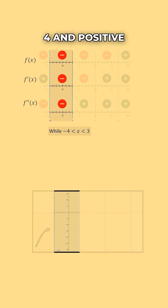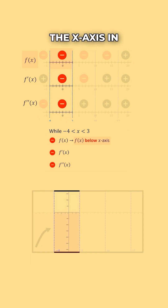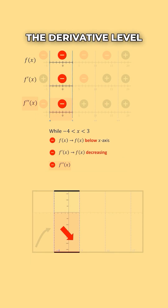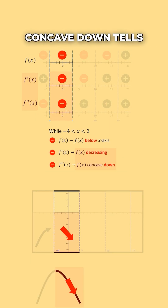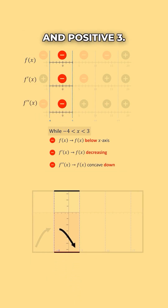Moving on to the section where x is between negative 4 and positive 3, all three of our signs are negative. The polynomial level tells us our function will be below the x-axis in this section. The first derivative level tells us that our function is decreasing, and the second derivative level tells us that we are concave down. Decreasing and concave down tells us our function will look like this, and it will be located below the x-axis when x is between negative 4 and positive 3.